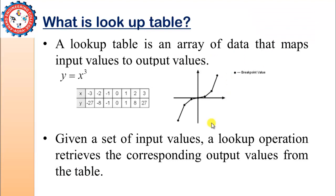A lookup table is an array of data that maps input values to output values. If you have some set of data with input values and output values, then a lookup table gives some relation. We can say that with the help of a lookup table we can establish some relation between the input and output, or simply we can estimate a model.